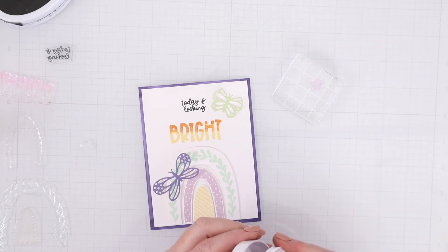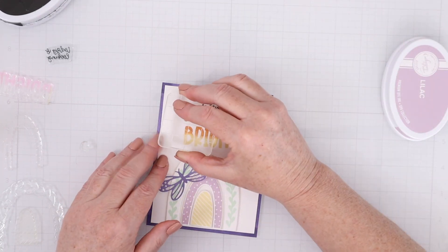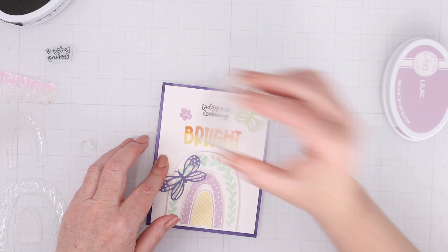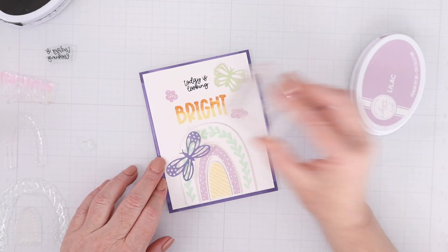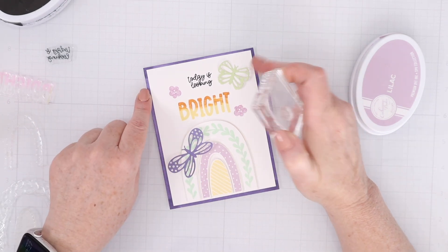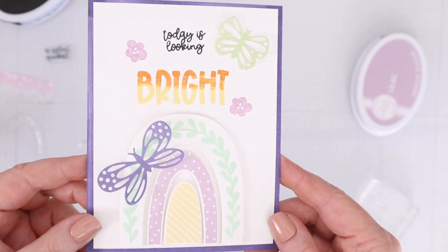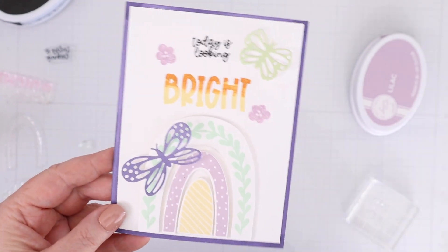There are those little stamps again; they're little flowers and a little heart. I'm going to use the little flowers in Lilac to make that visual triangle. The middle arc is Lilac and the two flowers are, and triangles like that just draw the eye around the card.